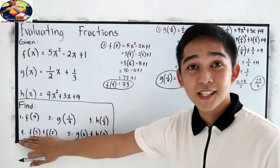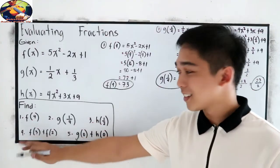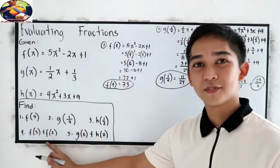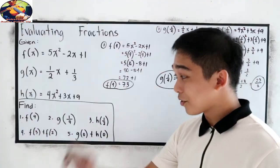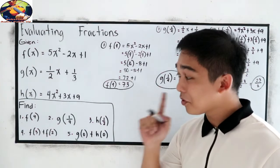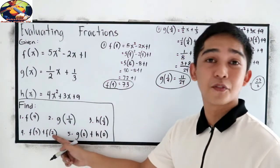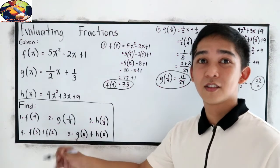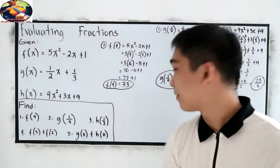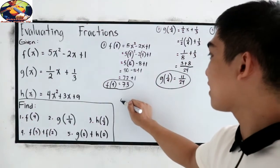Now, let's do number 4. f of 3 plus f of 2. So, let us find first f of 3. After finding f of 3, find f of 2. And after finding f of 2, combine the result. That is number 4.